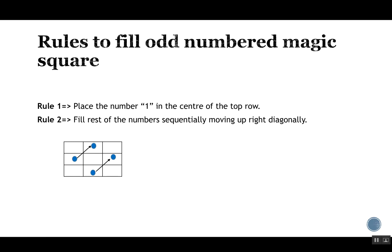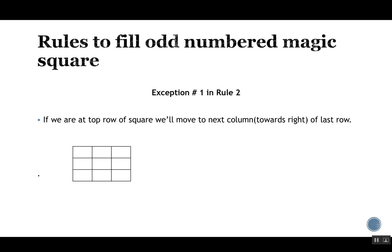However, there are exceptions to rule two. Exception one: if we are at the top row of the square, we cannot move up-right because there is no cell above. In that case, we move to the next column towards the right and place the number in the last row of that column.